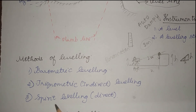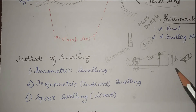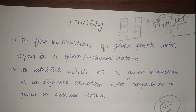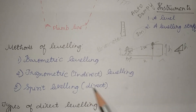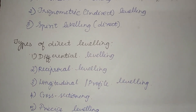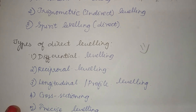Next is spirit leveling, also called direct leveling. We cannot use direct leveling to find the height of the building in that case, but as shown in the first example, we can use it to find the elevation at different points. A vertical angle is not included in direct leveling. We will look into direct leveling in detail in the upcoming videos, as it is the most widely used type by engineers. Other types include differential leveling, reciprocal leveling, longitudinal or profile leveling, cross-sectioning, and precise leveling. Please like, share, and subscribe.